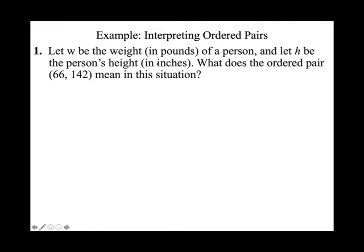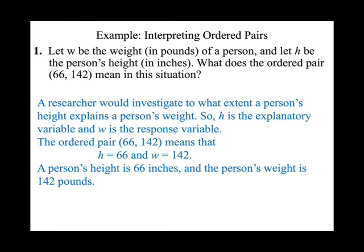A person's height will affect their weight — if you are taller you may be heavier. So H is the explanatory variable (X) and W is the response variable (Y). Since H represents X, H equals 66 inches; and since W represents Y, W equals 142 pounds. This means the person's height is 66 inches and their weight is 142 pounds.